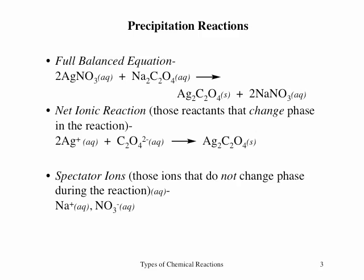The full balanced equation for a precipitation reaction shows all reactants and products, complete with phase. A solubility table allows the formula of the precipitating product to be identified. In a net ionic equation, the spectator ions, which are present in the aqueous phase as reactants and products, are not included.